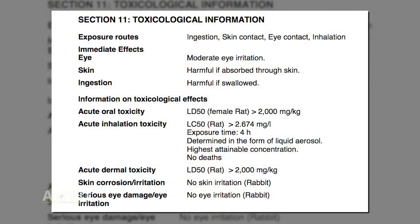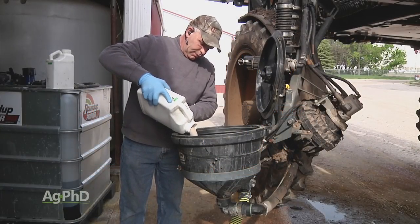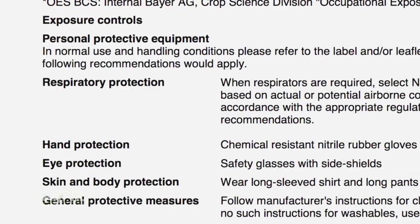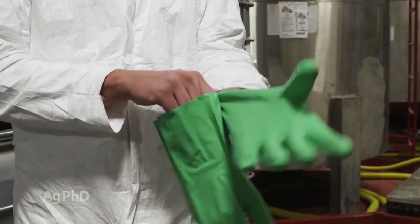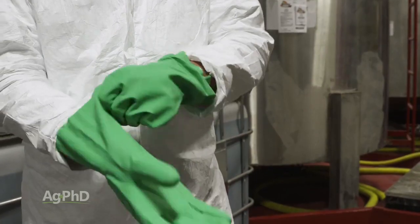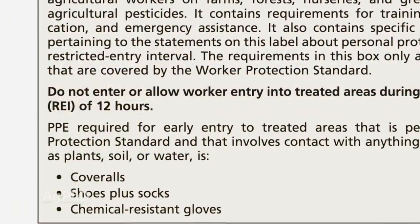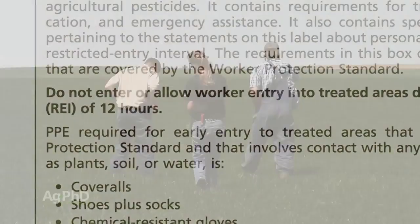One is the LD50, which you can usually find on the MSDS — the Material Safety Data Sheet — for each product. That basically tells you how lethal that particular product is, and how strong a dose you'd need before it gets really dangerous. Also, look at the personal protective equipment requirements: what do you have to wear to apply this product? And finally, what's the re-entry interval — how quickly after you spray can you go back in the field? Those are the three big things we look at on the safety side.